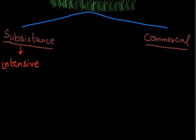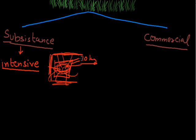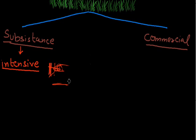Intensive subsistence agriculture means where the population is very dense and a high population depends on a small land area. Many people depend on a particular small land area — they are all engaged in it, and whatever production is produced, for example 10 kg of rice, the whole production is consumed by all the people living there. That is why this type of agriculture is called intensive agriculture, producing in high-density populated areas like Bihar, Uttar Pradesh, Odisha, and West Bengal.